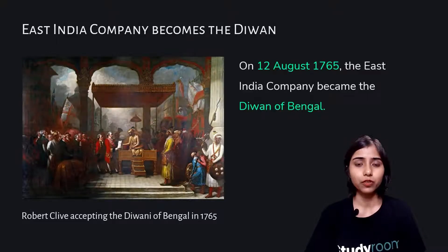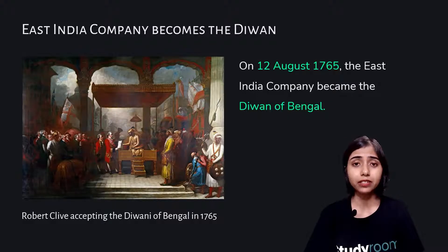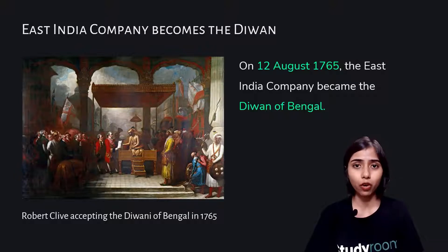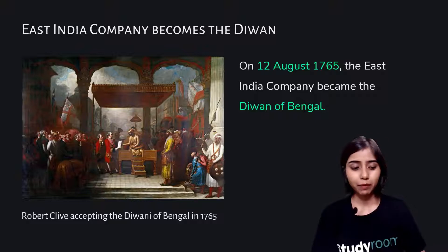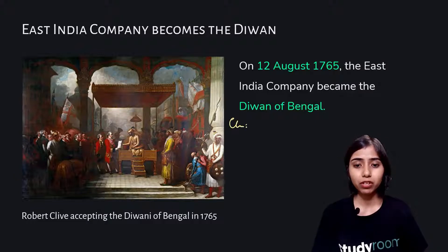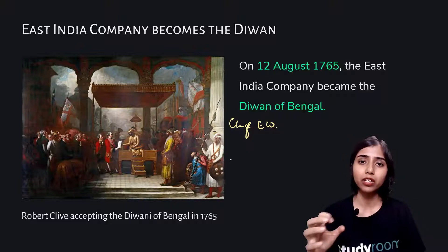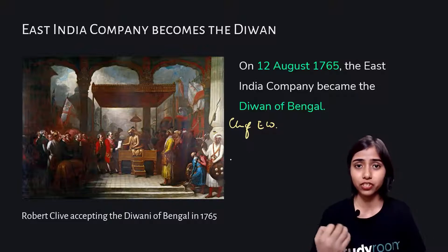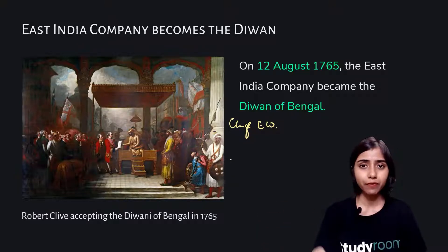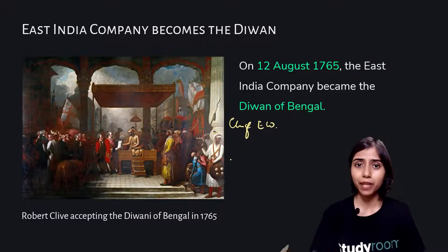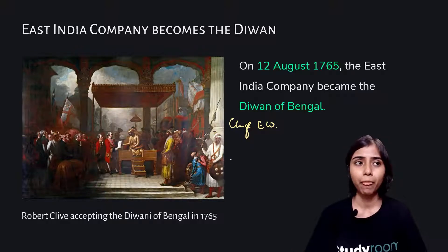The East India Company becomes the Diwan. In August 1765, the East India Company was granted the Diwani of Bengal by the Mughal Emperor. With this Diwani, they became the chief economic officer, meaning they had full control of the revenues generated from their area of Diwani. Basically, if you are a Diwan of a province, all the revenues coming from there are yours to manage as you see fit.